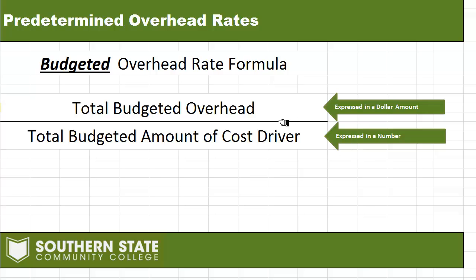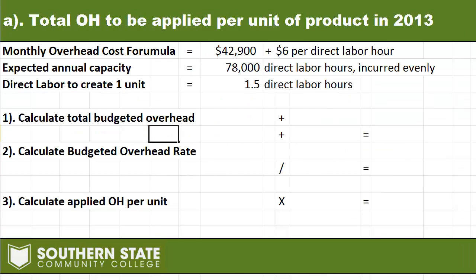The top part of that fraction is expressed as a dollar amount — your total overhead cost budgeted for the year. The bottom part, the denominator, is expressed as a number. For example, if we're talking about direct labor hours, maybe it's 70,000 direct labor hours. So the idea is we take our total budgeted overhead cost, divide it by the driver, and we get some kind of per-unit amount.